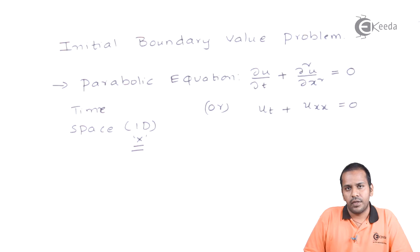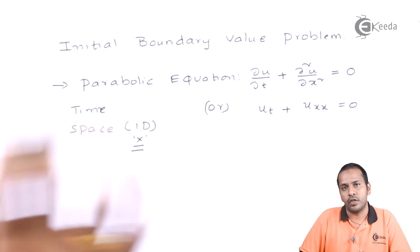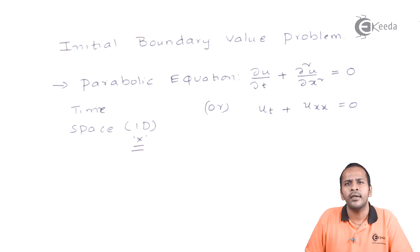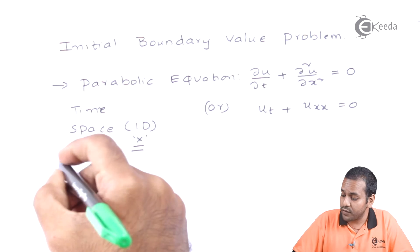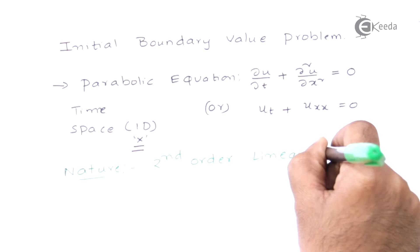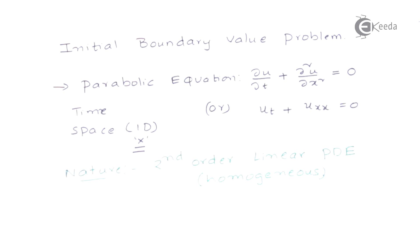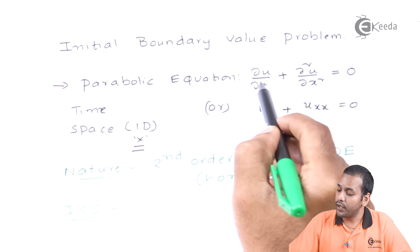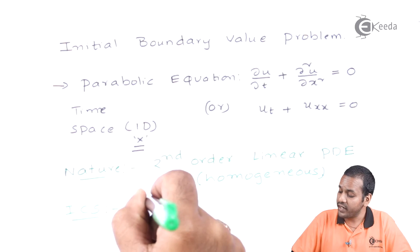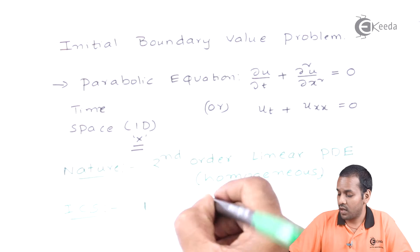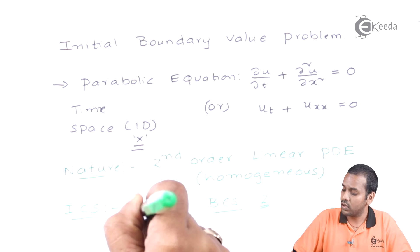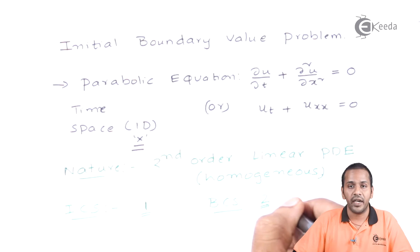We have both independent variables involved — one is time and another is space. We need to give conditions such that this problem can be solved. Let's discuss the nature of the problem first. The power of t is 1, so we need one initial condition. The power of x is 2, so we need two boundary conditions.